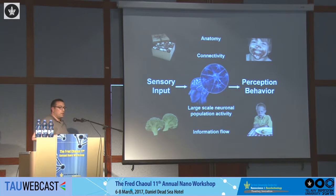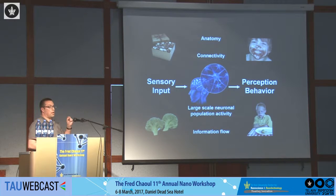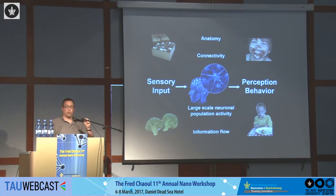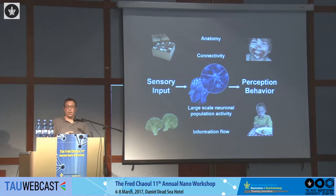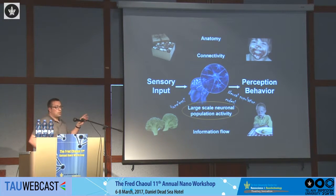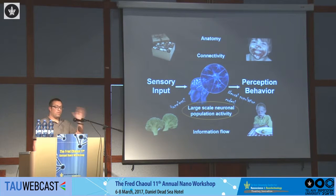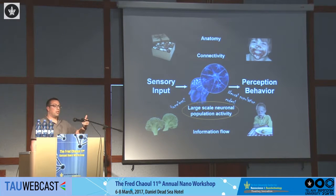In order to decipher the neural code, we need large-scale neuronal population activity. Any experienced code breaker will tell you that to decipher a code you need two things: a large sample of the code, and the ability to manipulate it to cause causal changes. This is very difficult. In mice, for example, the olfactory system has more than 1,000 different types of receptor neurons at the first layer and tens of thousands of neurons at the second layer, making it very difficult to get a large sample of population activity.